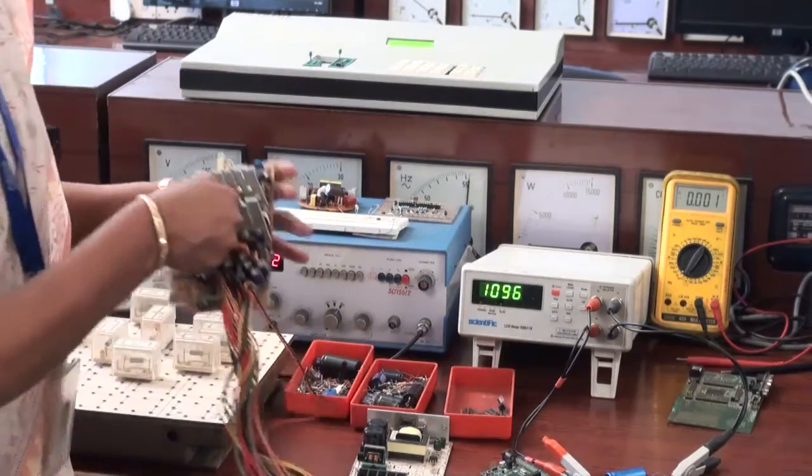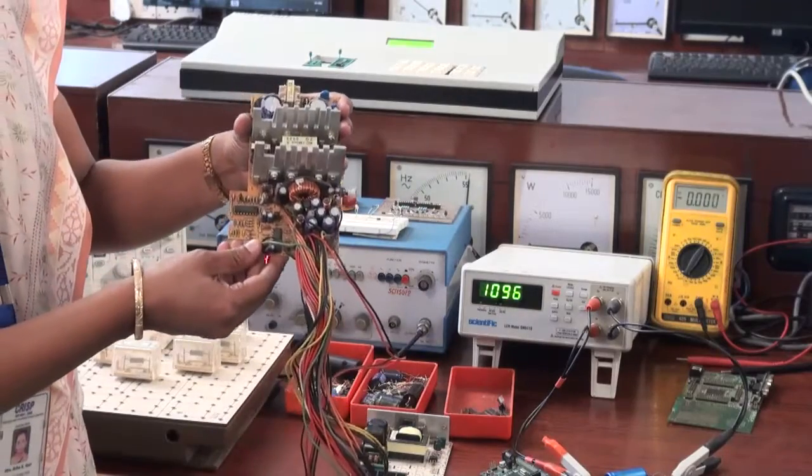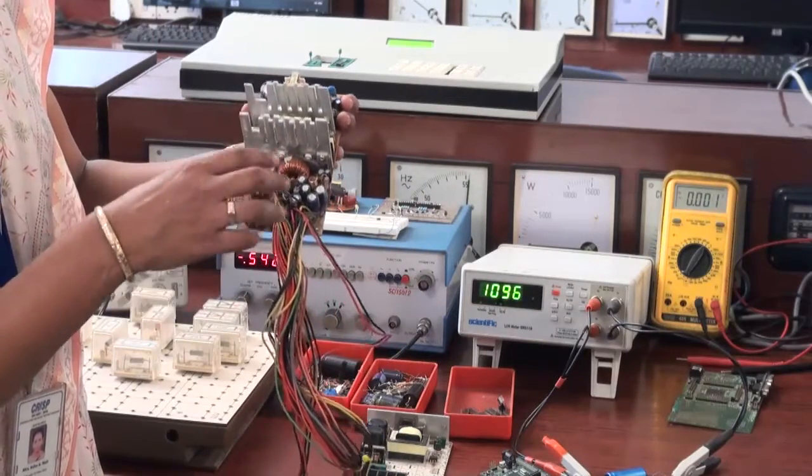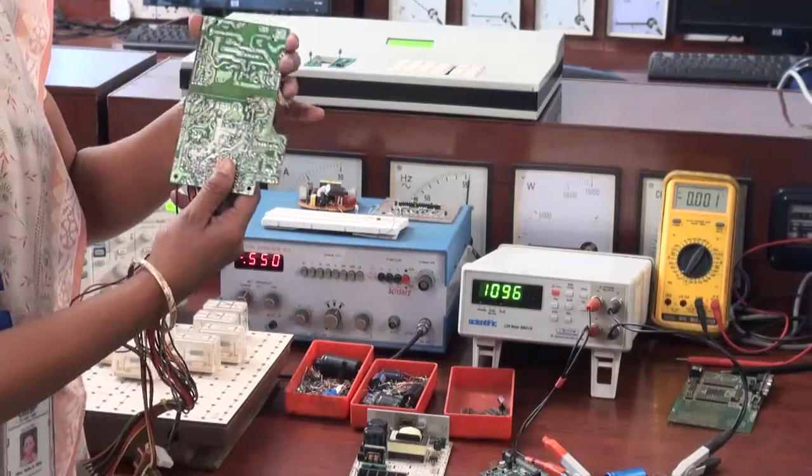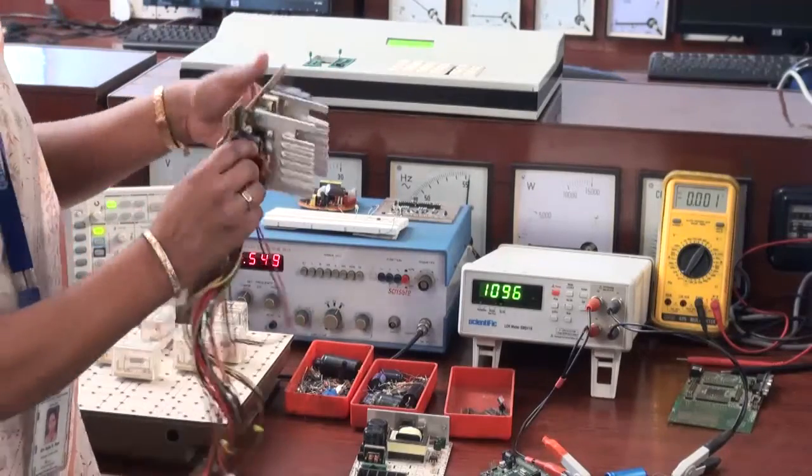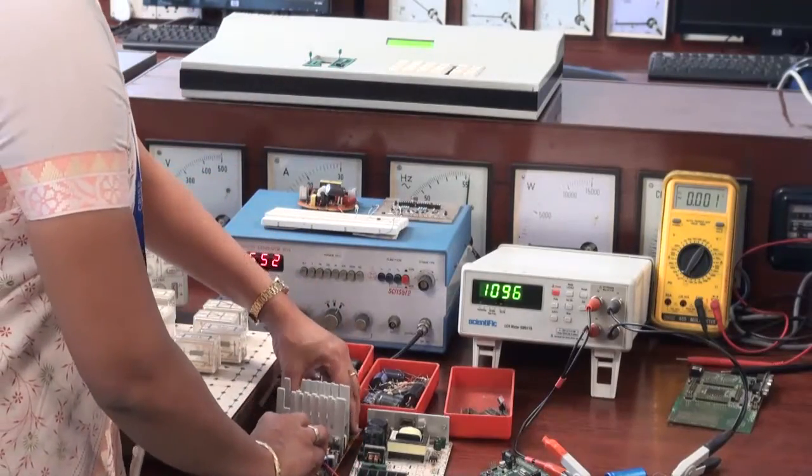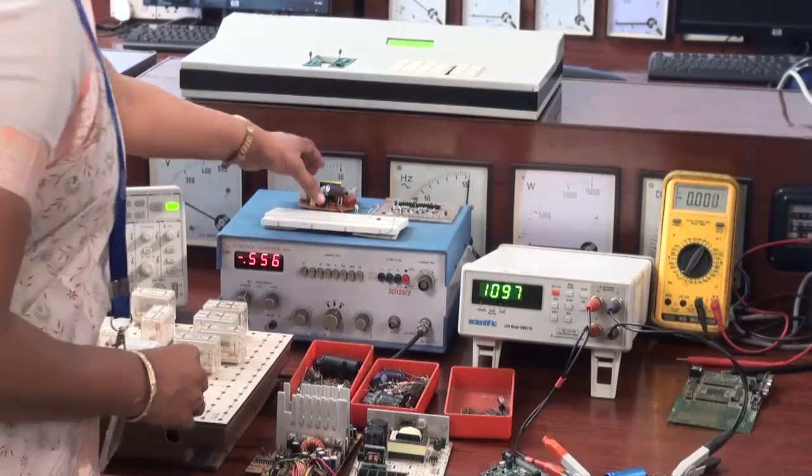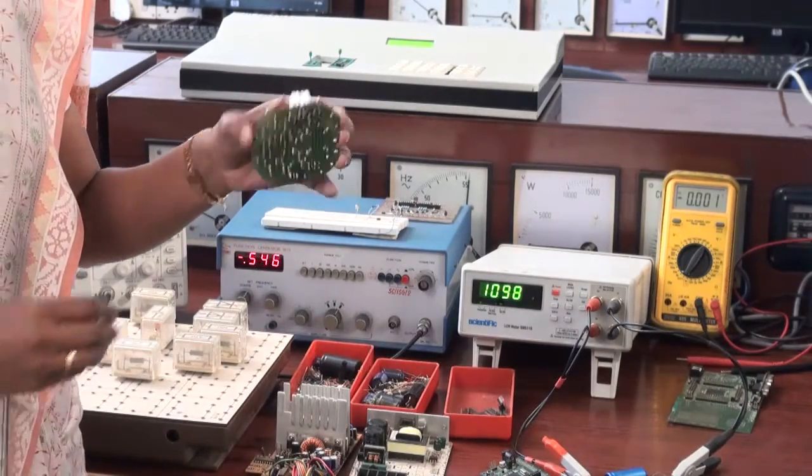Basically a printed circuit board is something like this in which all these discrete components are mounted using soldering technique. So after testing of components, we ask our participants to assemble these components on a printed circuit board.